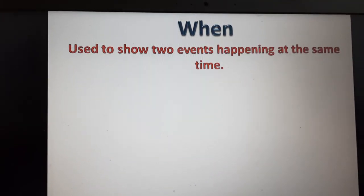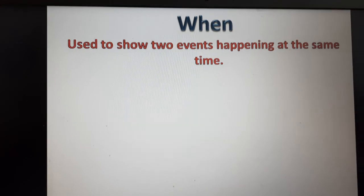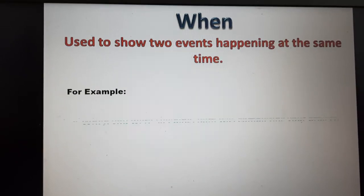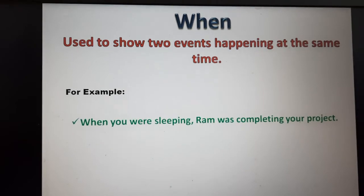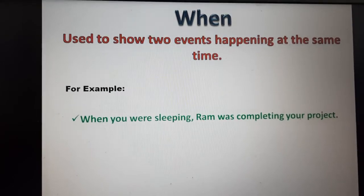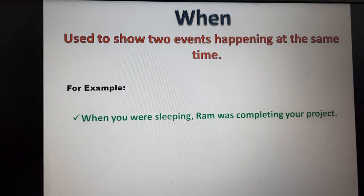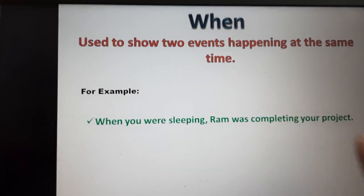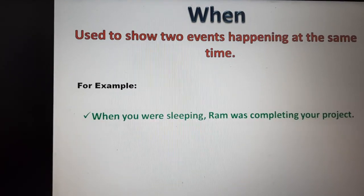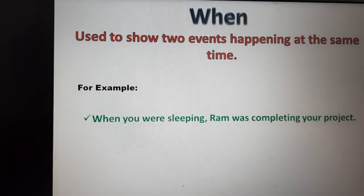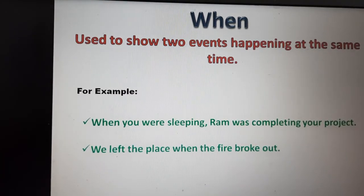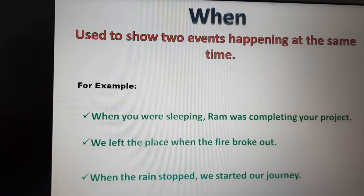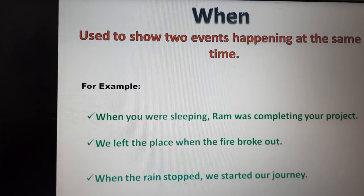Next is 'when'. When is used to show two events happening at the same time. For example: When you were sleeping, Ram was completing your project — these two actions were going on at the same time, so we use 'when'. We left the place when the fire broke out. When the rain stopped, we started our journey.